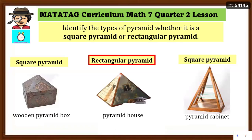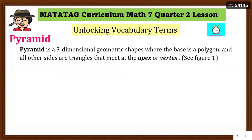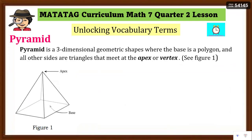Today let's focus on finding the volume of rectangular pyramids. But first, let's unlock the vocabulary terms. A pyramid is a three-dimensional geometric shape where the base is a polygon and all other sides are triangles that meet at the apex, or what we call the vertex. As seen in figure one, the apex is at the top where the sides meet at one point.